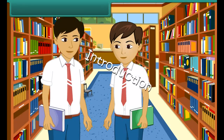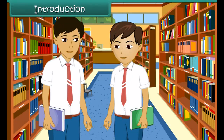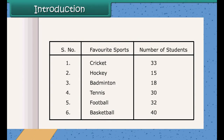Ravi, have you done today's maths homework? Yes, I have gathered some information about the different sports liked by the students of our class. Okay, but how will you interpret which is the favorite sport among the students? It's easy — I have arranged the data in tabular form. Now by looking at the data I can say basketball is liked by the highest number of students.